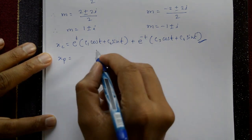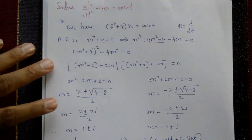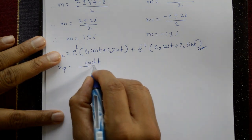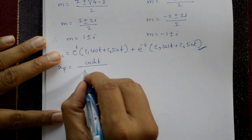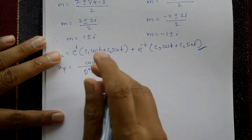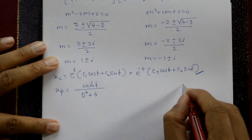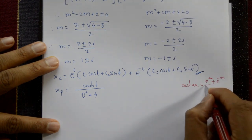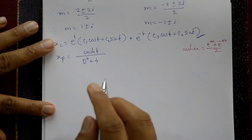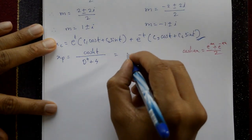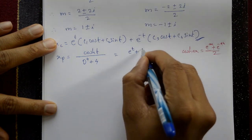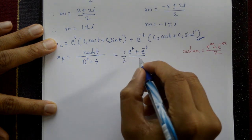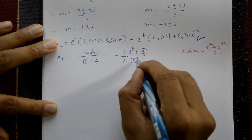For the particular integral, xp = cosh(t) / (D⁴ + 4). Using the standard formula cosh(at) = (e^(at) + e^(-at))/2, we write xp = [e^t/(D⁴ + 4) + e^(-t)/(D⁴ + 4)] / 2.